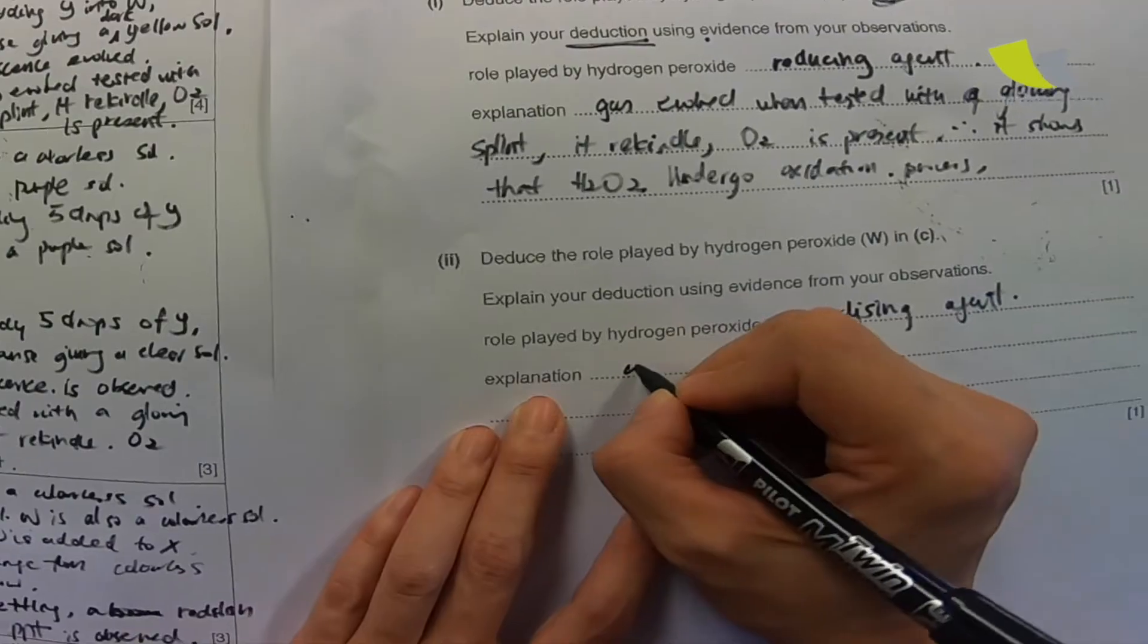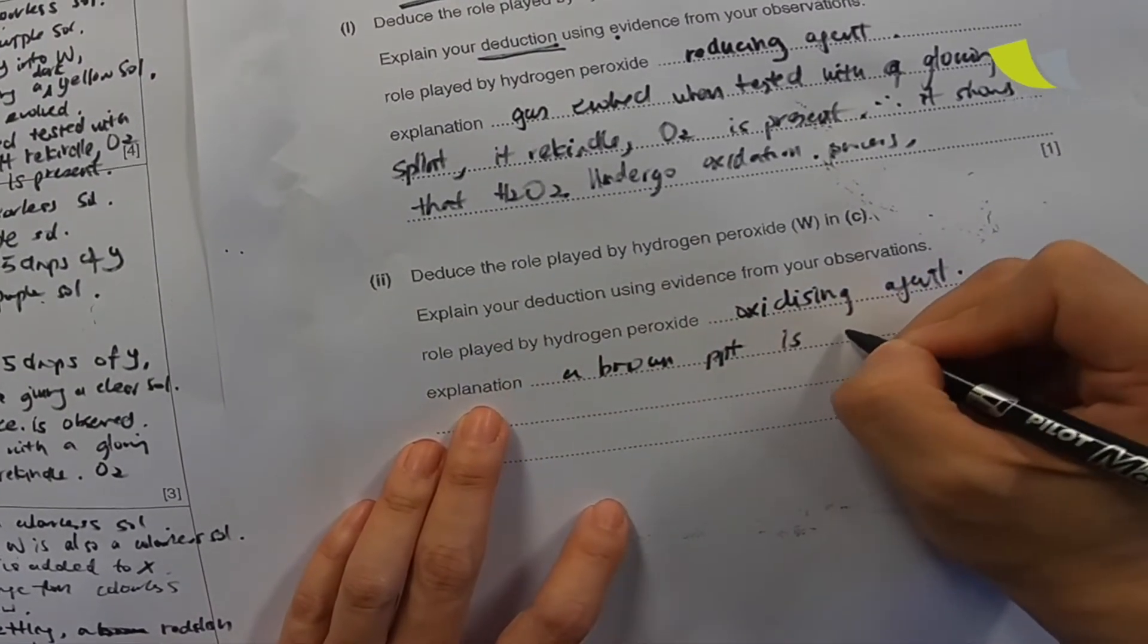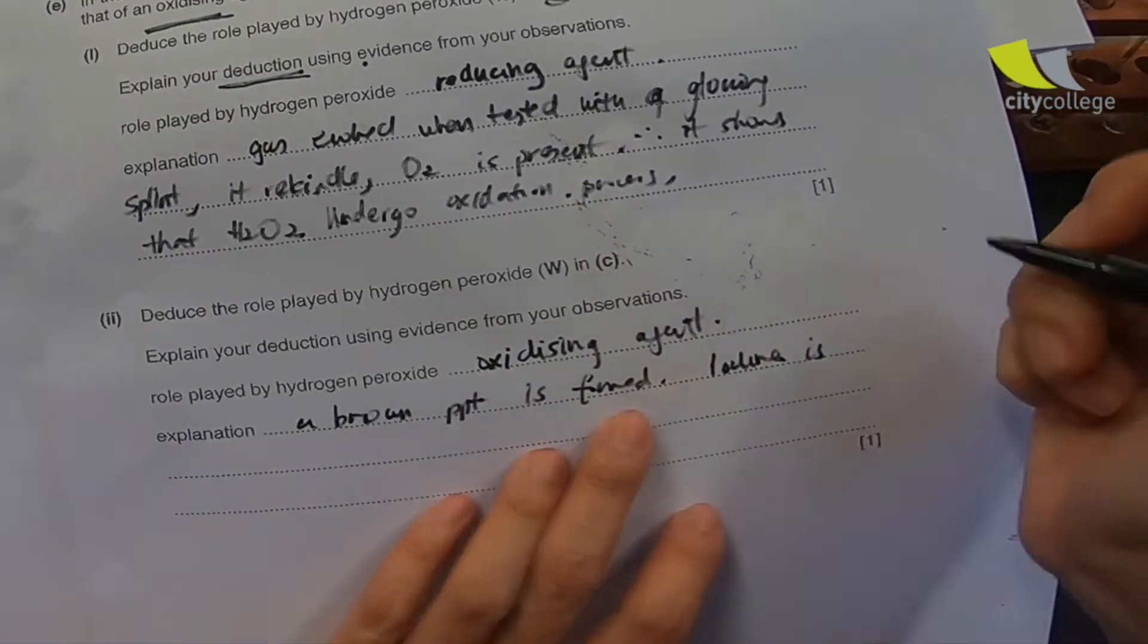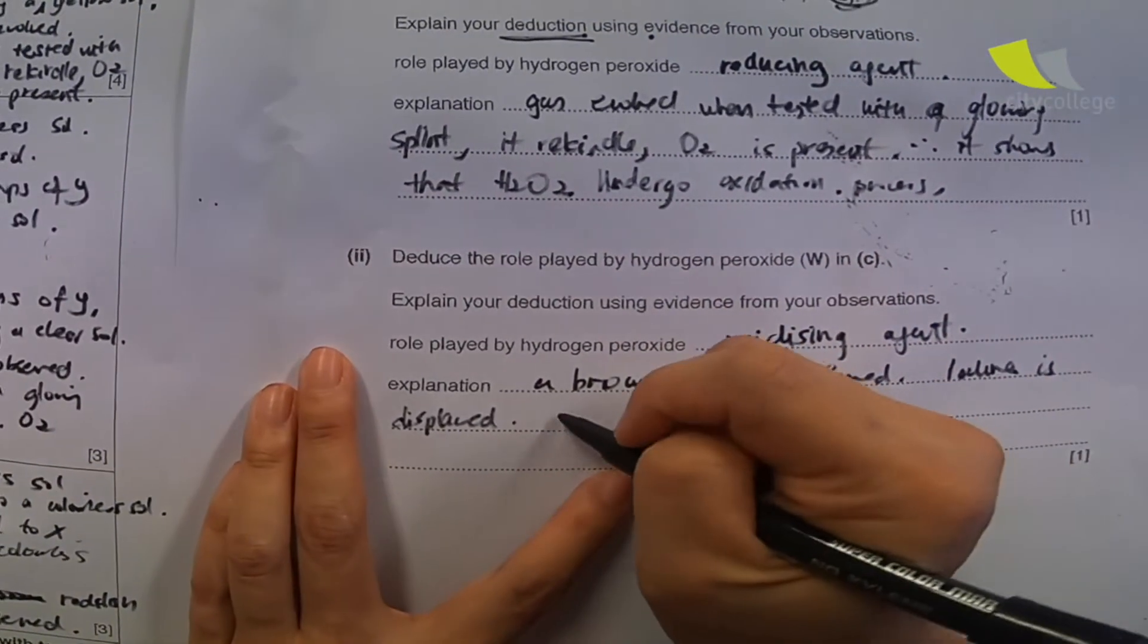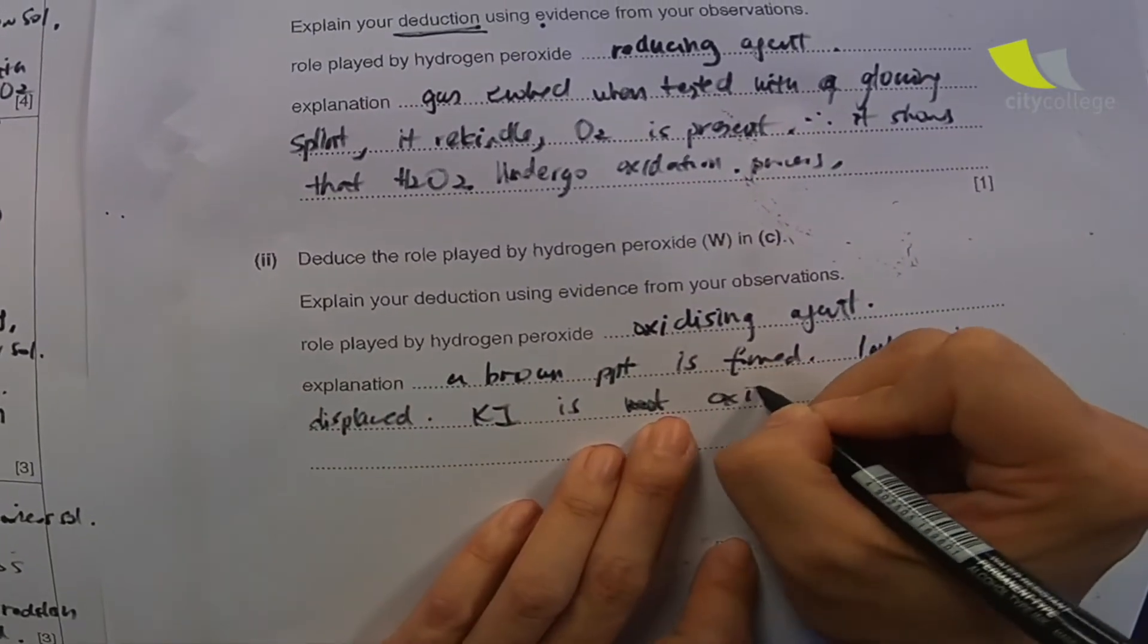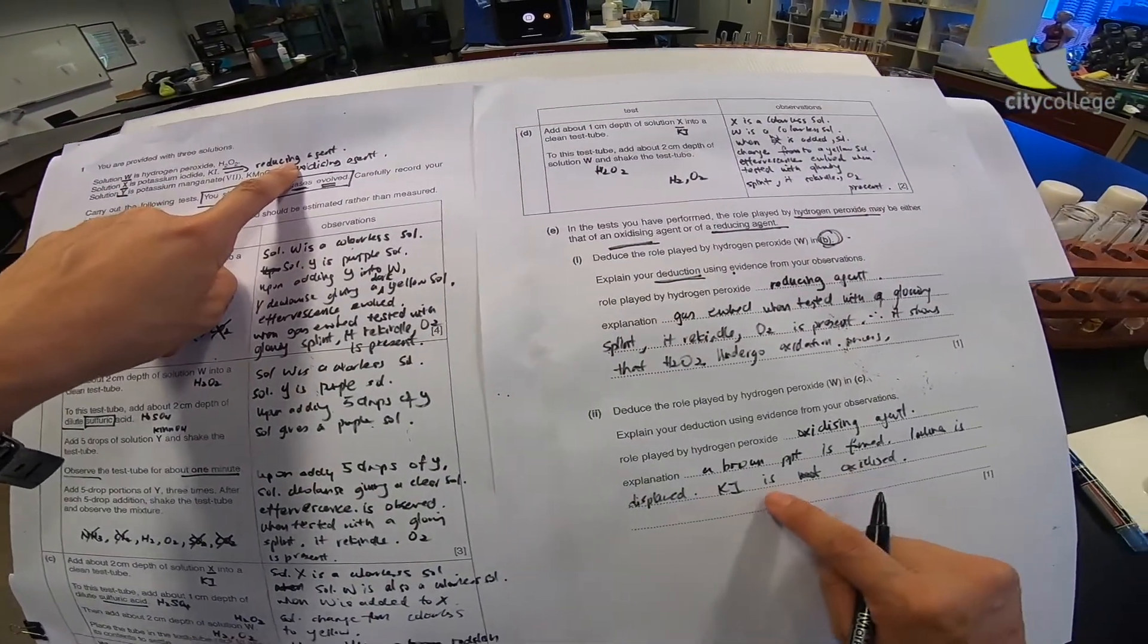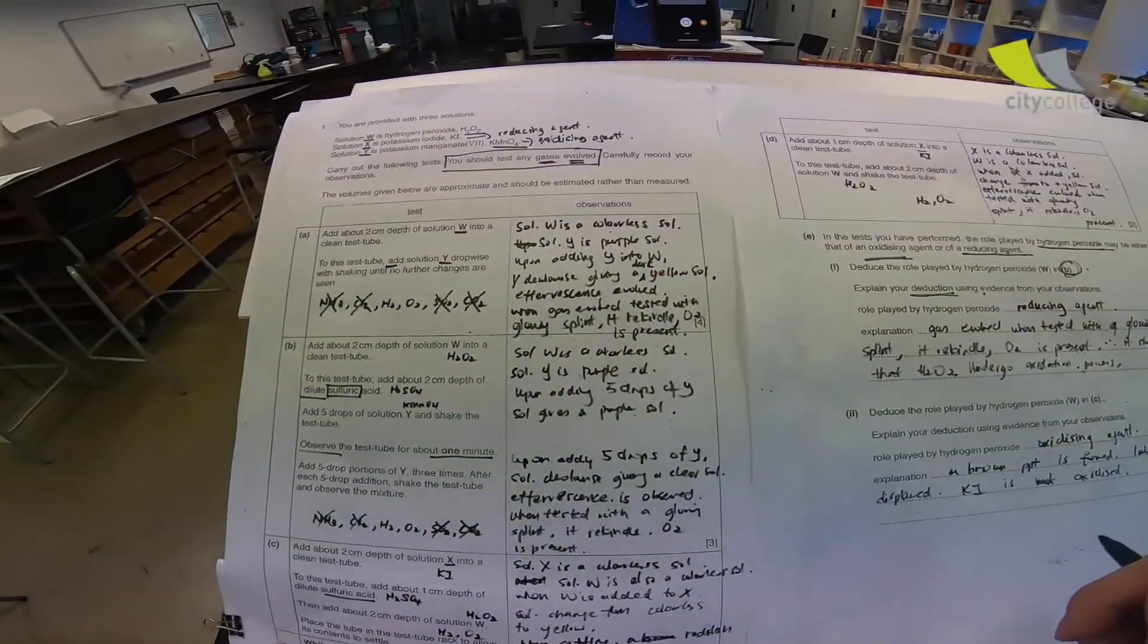Explanation: a brown PPT is formed. Iodine is displaced. KI is oxidized. Because KI is a reducing agent, it will go through oxidation. So, KI is oxidized. Full stop. One mark, one mark, you get your marks already. As simple as that, got it?